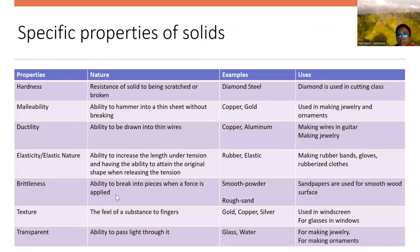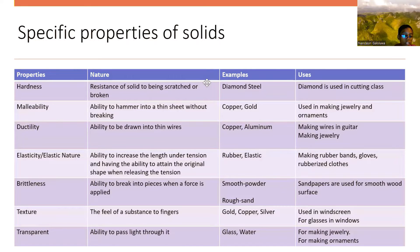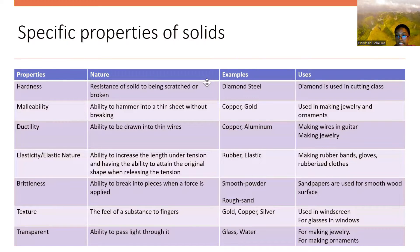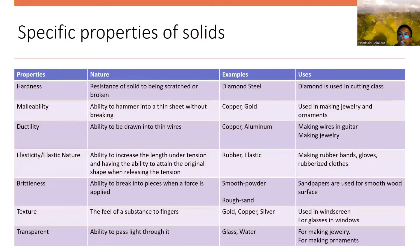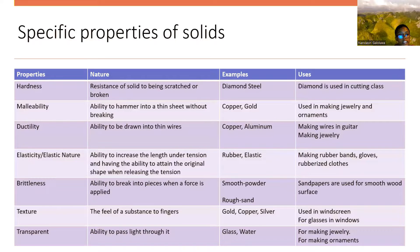The last part of the science second unit is specific properties of solids. The first property is hardness. The nature of it is resistance of a solid to being scratched or broken. Examples are diamond and steel. Diamond is used in cutting because it is the hardest object.